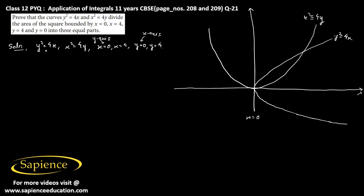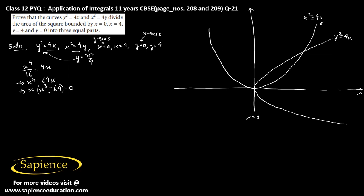Now at which point do these two graphs intersect? From x squared equals 4y we get y equals x squared by 4. Substituting into y squared equals 4x gives x to the power 4 by 16 equals 4x, so x to the power 4 equals 64x, meaning x times (x cubed minus 64) equals 0.